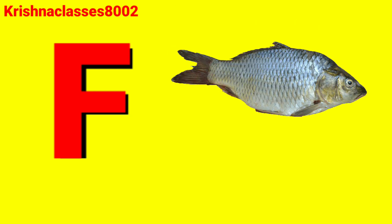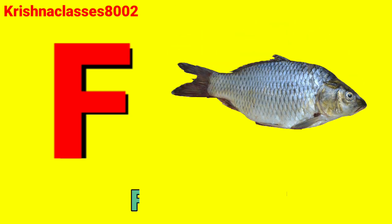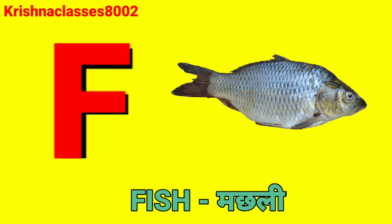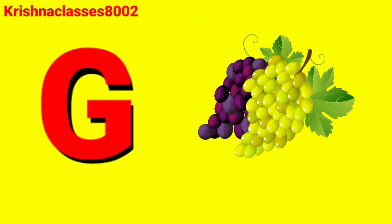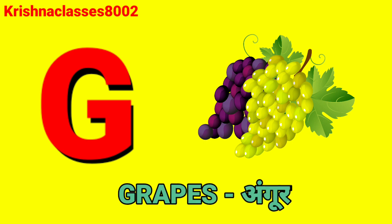F for fish. Fish means machlil. F for feet. Feet means machlil. G for grabs. Grabs means ungoor. G for glut. Glit means andoor.